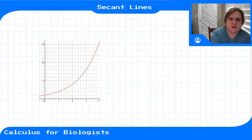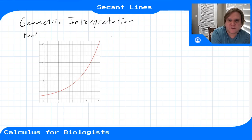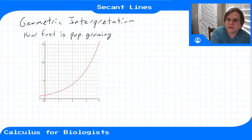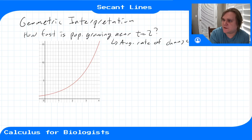There's a nice geometric interpretation to go along with these calculations of average rates of change. If I'm looking for how fast my population is growing near c equals two, then I will look for the average rate of change, let's say between zero and two for our first approximation.